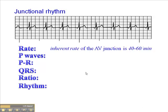Just out of curiosity, we'll calculate the heart rate. This QRS falls fairly close to a dark line, so the heart rate here is 300, 150, 100, 75, 60. So in fact, this is an example of an accelerated junctional rhythm.